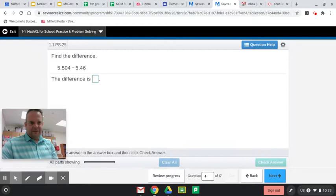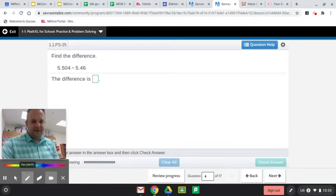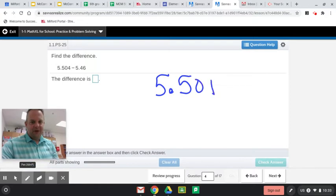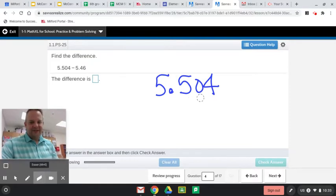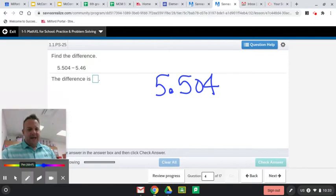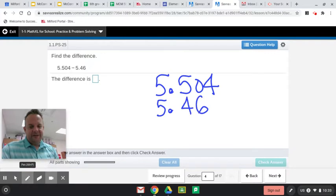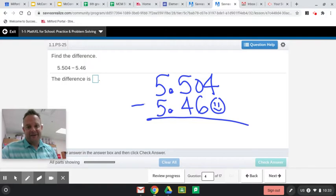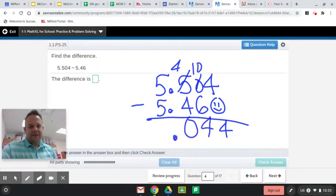We'll go on to the next here. Find the difference. All right. So we have 5 and 504 thousandths. Tenths, hundredths, thousandths. That's what that means. Okay. Little tips and tricks you'll learn here from me. And we are subtracting 5 and 46 hundredths. And we'll add a placeholder zero. I'll put a smiley face. And we're subtracting. We're finding the difference. We've got to borrow here. There we are.